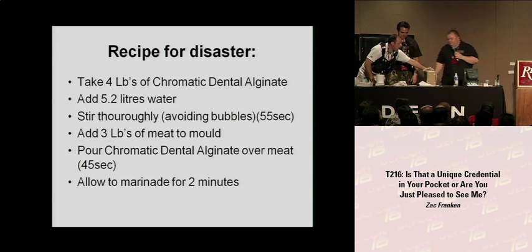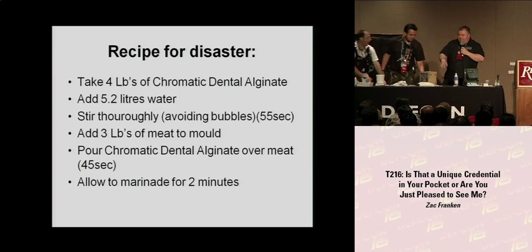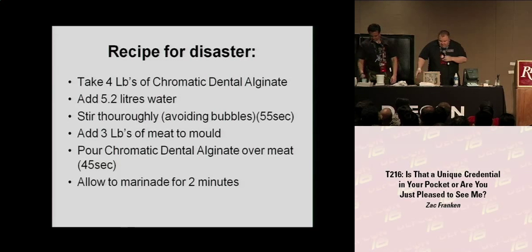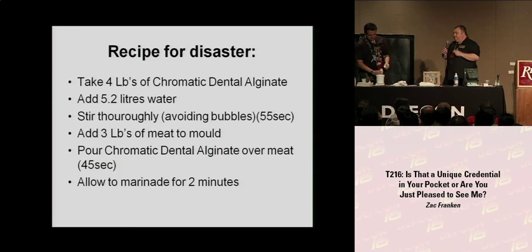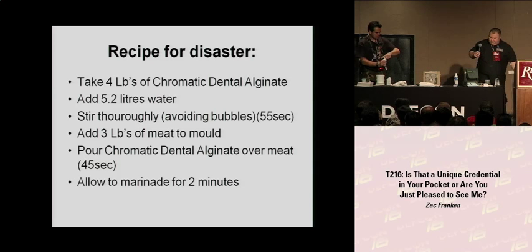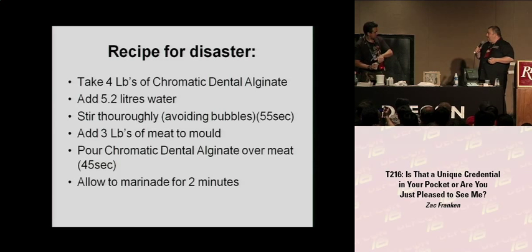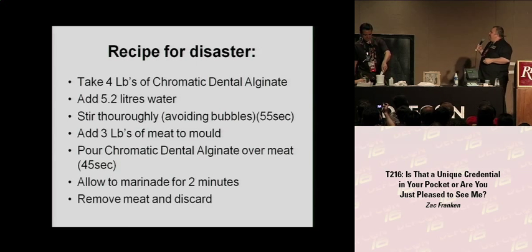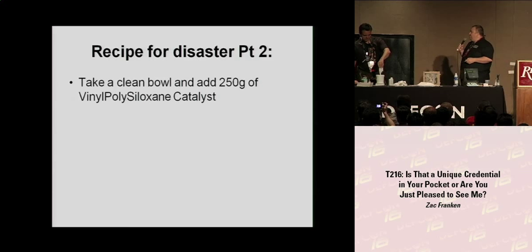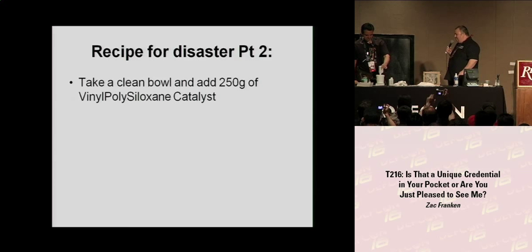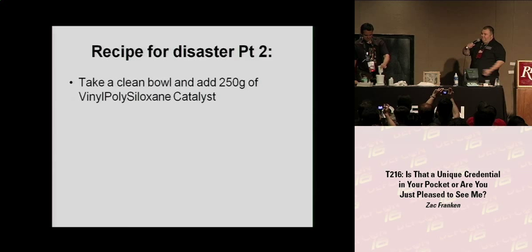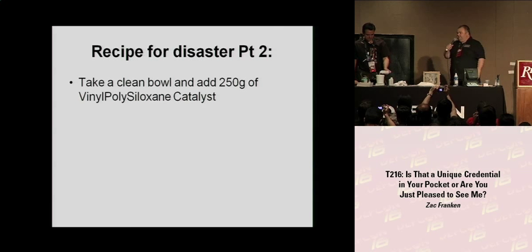That was part one - we've got the mold. Now comes step two. What we're going to do is mix up some vinyl polysiloxane, also known as silicon rubber. This stuff is fabulous. Most silicon rubber takes 24 hours to cure, but this is going to go from liquid to solid in 20 minutes, possibly sooner because it's a bit warm.